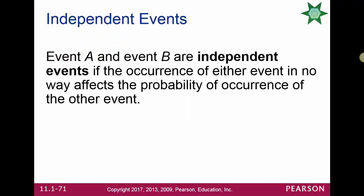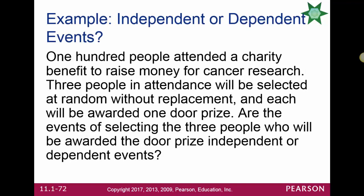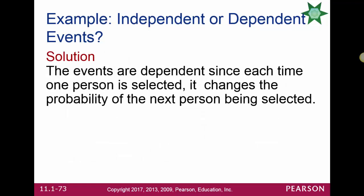Events A and B are independent if the occurrence of either event in no way affects the probability of the other. Rolling dice and tossing coins are examples of independent events. At a charity benefit, 100 people attended and 3 will be selected without replacement for door prizes. The events of selecting those three people are dependent, because every time we pick a person it changes the probability of the next person being selected — it is sampling without replacement.